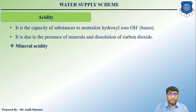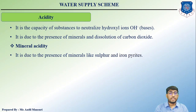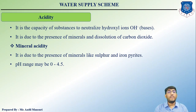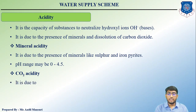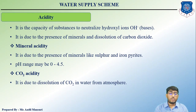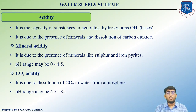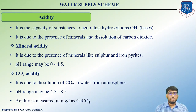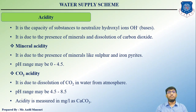There are different types of acidity. Mineral acidity is due to the presence of minerals like sulfur and iron pyrites, and its pH range is between 0 and 4.5. Carbon dioxide acidity is due to the dissolution of carbon dioxide from the atmosphere into water, with a pH range between 4.5 and 8.5. Acidity is measured in milligrams per liter of calcium carbonate (CaCO₃).